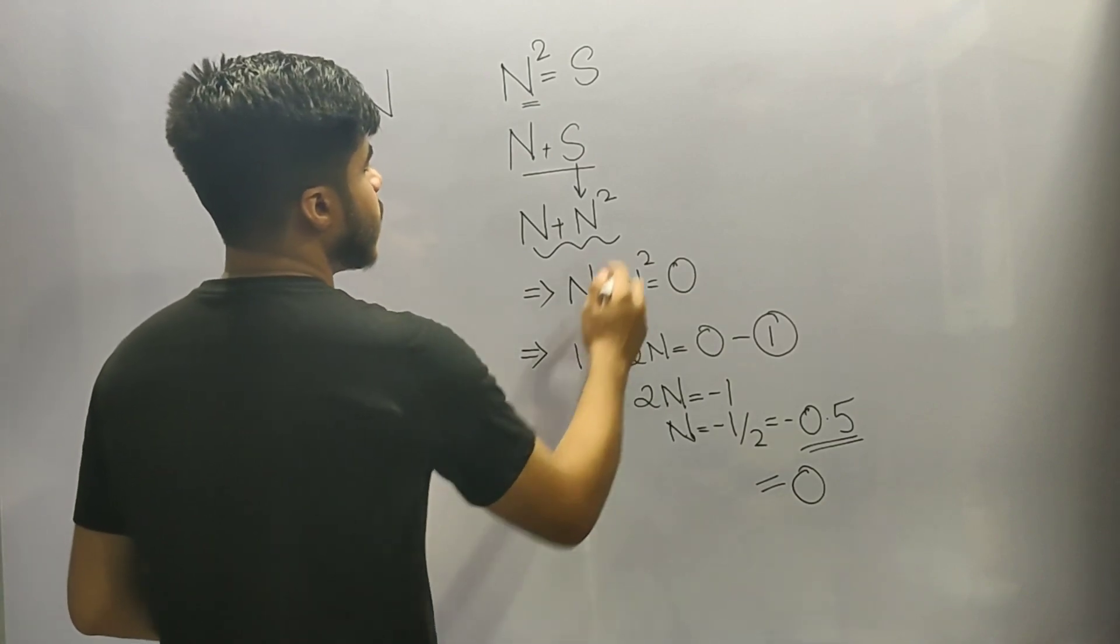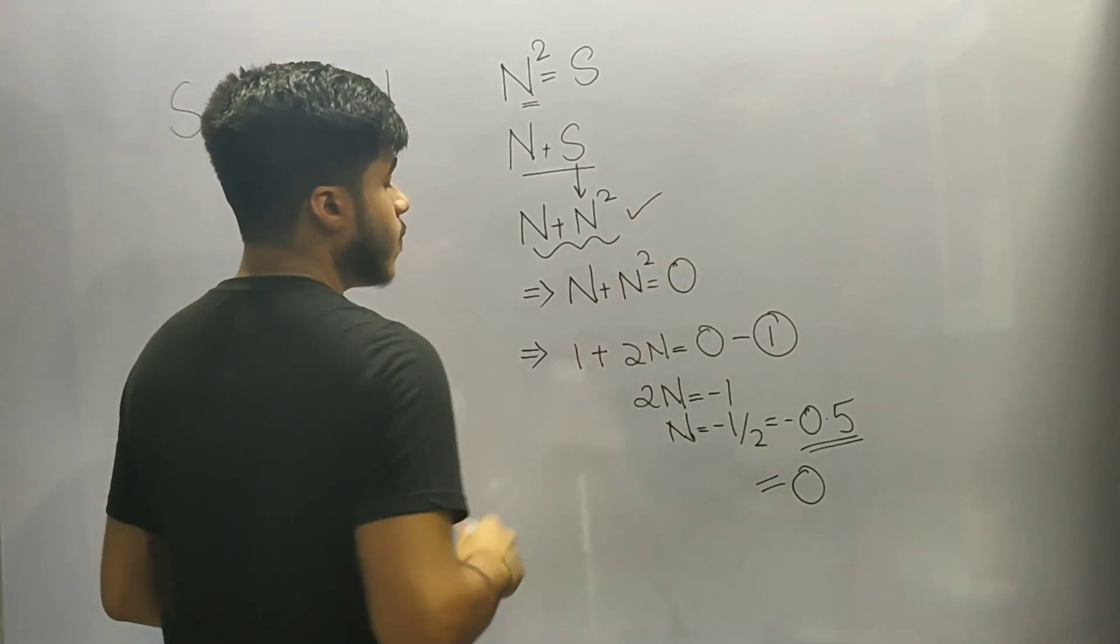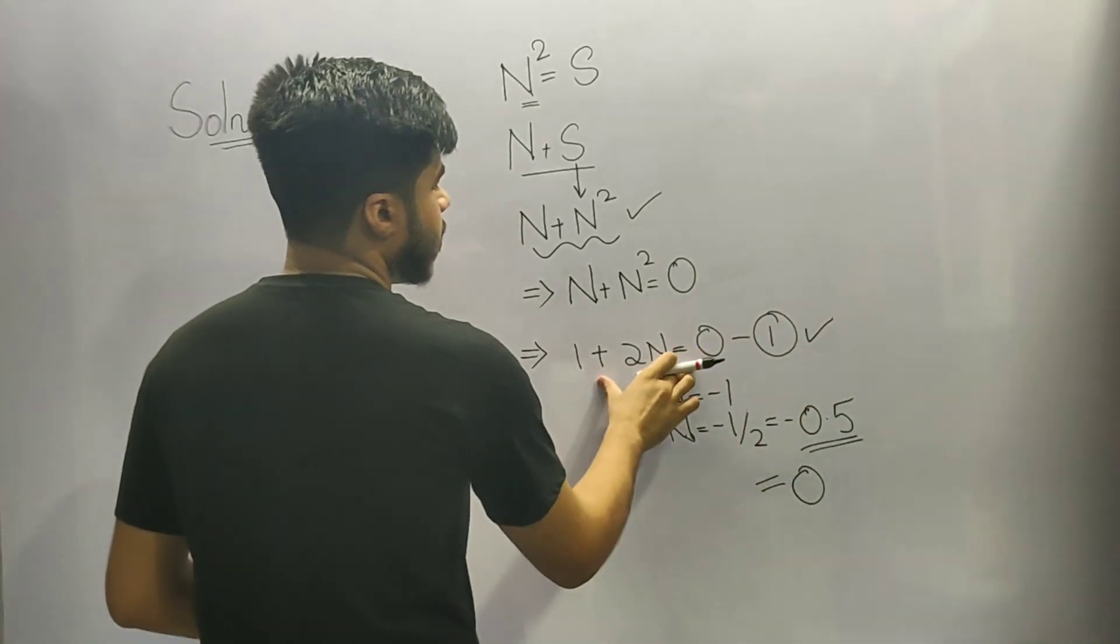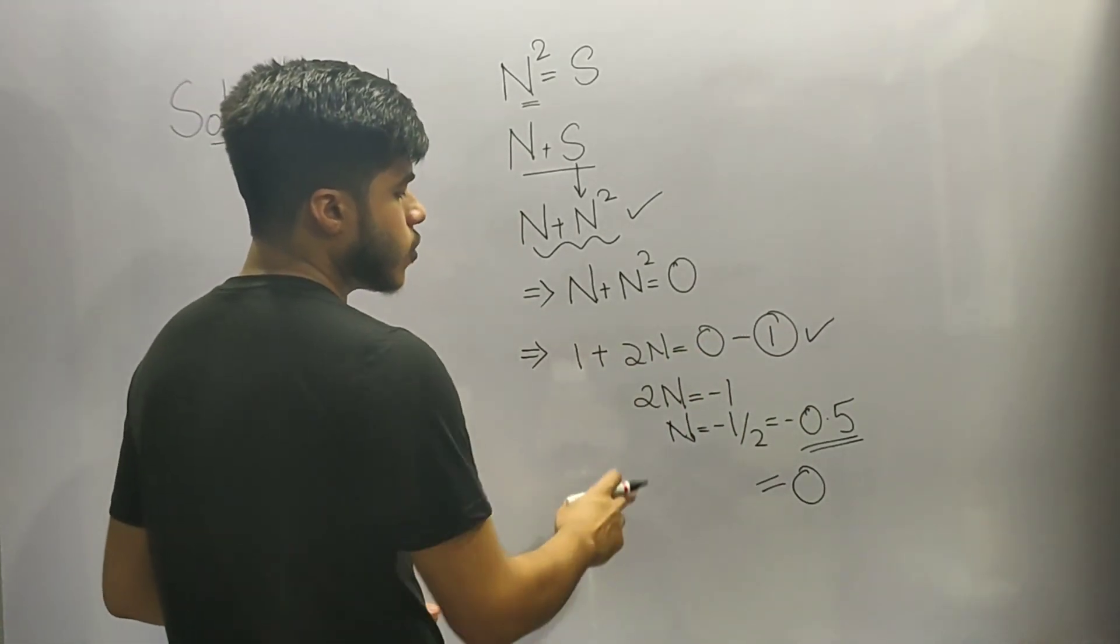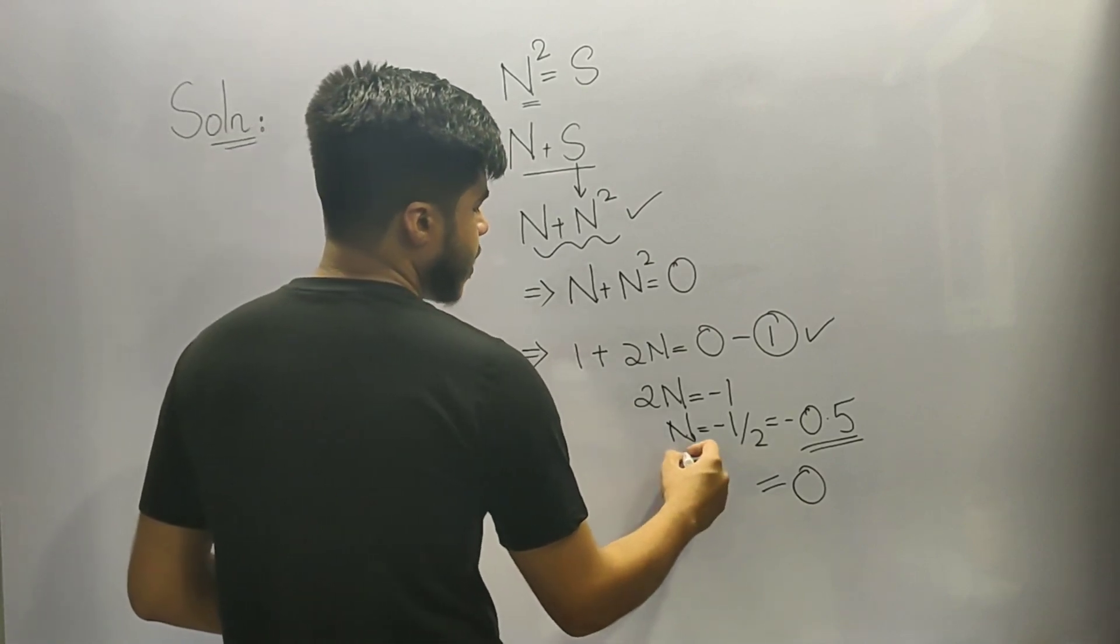So what we did was we converted our equation to a single variable. Then we differentiated our equation to find the value of n, and lastly to check whether the value that we have got was minimum or not, we differentiated it once again.